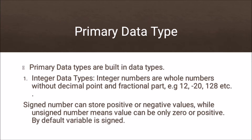For example, 12.20 is not an integer number, but 12, minus 20, 128, etc. are integer numbers, and these are included in integer data types. So if you want to define some variable and store a particular integer value, then you have to define integer data type int.